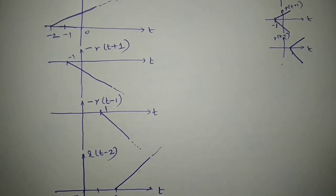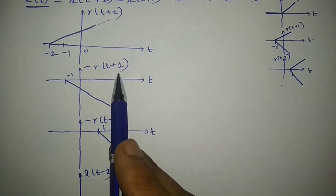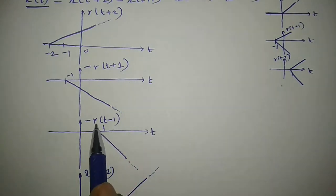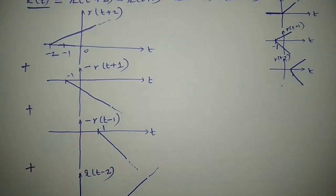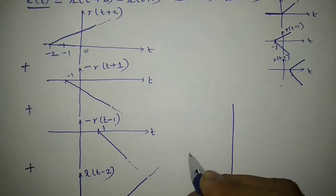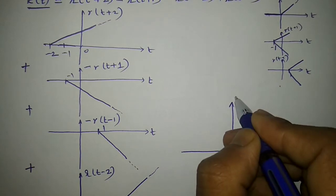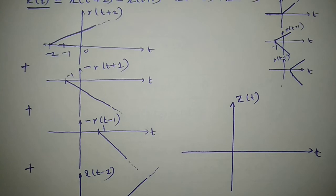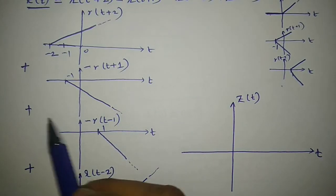These are the four signals I am interested in: the first signal R(t+2), the second signal minus R(t+1), the third signal minus R(t-1), and the fourth signal R(t-2). I need to add all these four signals. Whenever adding or subtracting signals, it is always better to write the signals one below the other so it is very easy to sketch the final signal.